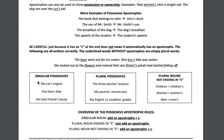We've been talking so far about singular possessives. Now, what happens if we have a plural possessive, which means we have a word that ends in S and we also have something that belongs to that word? So: the three witches' brooms, my parents' anniversary, my English 11 students' grades. I just add the apostrophe after the S. The grades belong to the students, the anniversary belongs to my parents, the brooms belong to the witches — but I just need that apostrophe afterward.